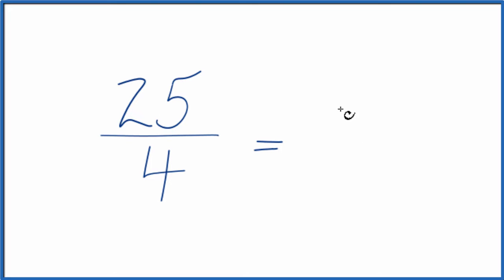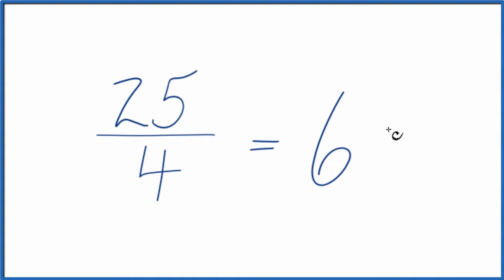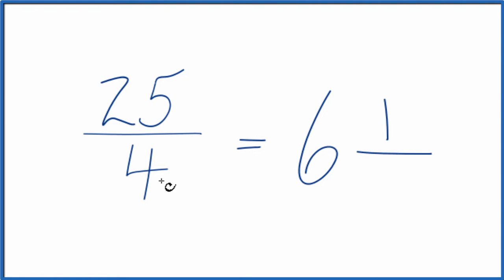So 4 goes into 25 six times. 6 times 4 is 24 with 1 left over. So we put the 1 here, bring the 4 across. And we could write the improper fraction 25 over 4 as 6 and 1 fourth.